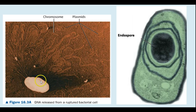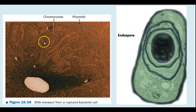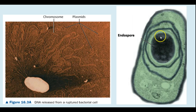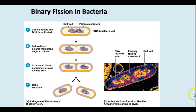Here we see a couple of other pictures. This shows how much DNA is released from a ruptured cell — there's a lot, even though there's only one chromosome, and you can see a couple of separate pieces that are plasmids. This also shows an endospore with several walls around this resistant area that can resist drying out and survive for very long periods of time.